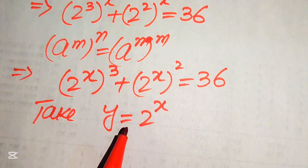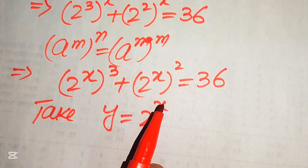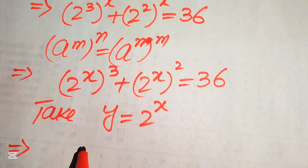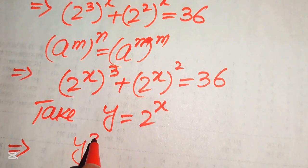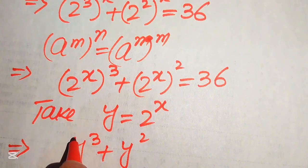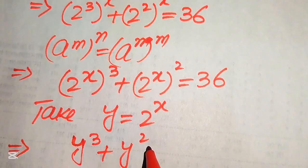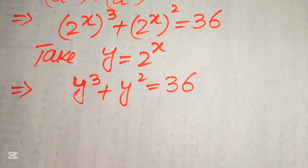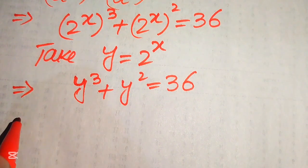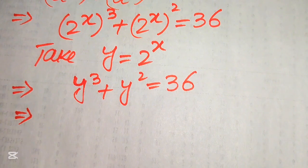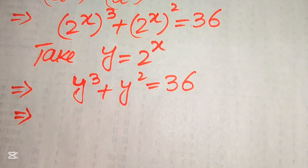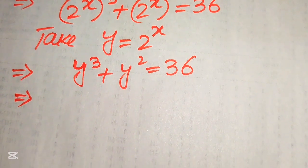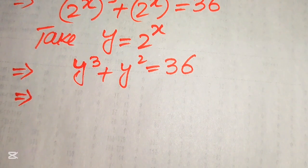When we substitute y equals 2^x, the equation becomes y³ plus y² equals 36. The equation is now in cubic form, and we need to find the factors of this equation to get the values of x.